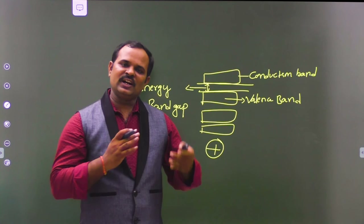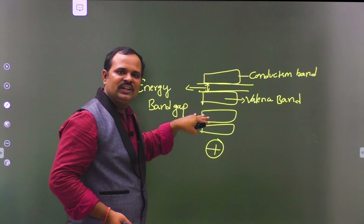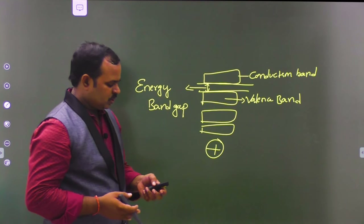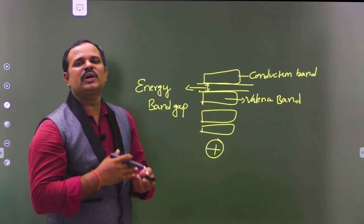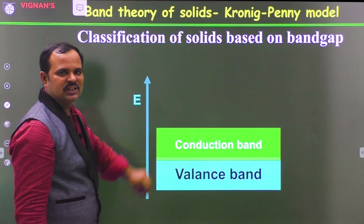Based on the band gap, we can classify materials into conductors, semiconductors, and insulators. These band gaps are formed because of the periodic potential — the periodic potential causes the solid to have bands of energies. Based on the band gap between the valence band and conduction band, we classify the materials. The valence band is the last filled shell and the conduction band is the empty shell above it.